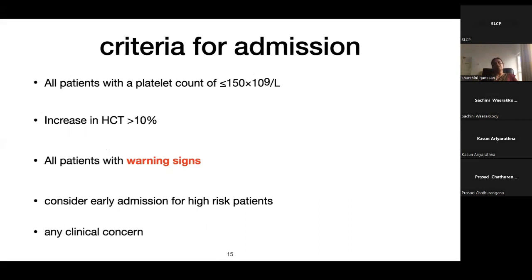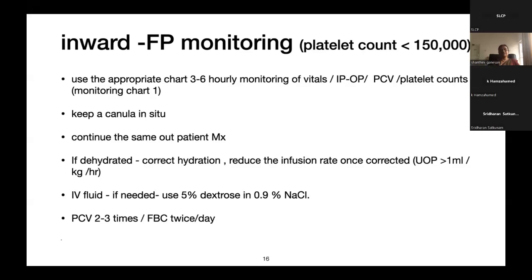When should we admit these children? All patients with platelet count less than 150,000 should be admitted. If there is an increase in hematocrit of more than 10%, these children should be admitted. All patients with warning signs or symptoms need to be admitted. High-risk patients — especially infants, obese children, or those with major co-morbidities — should be admitted easily so we can proceed with IV fluids if necessary.